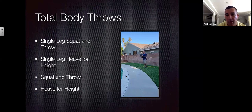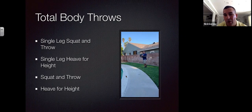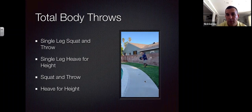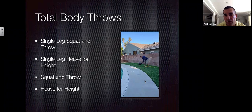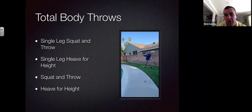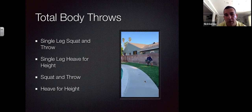Total body throws are another series — a single leg RDL and throw, what I call single leg squat and throw. The first movement gets the single leg working, then a single leg key for height similar to a jerk, and finally key for height. We're very big on single leg work because that's how most sport is played.